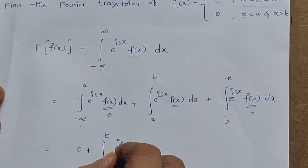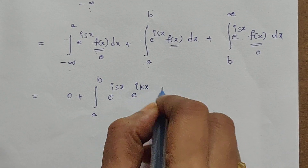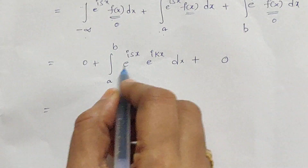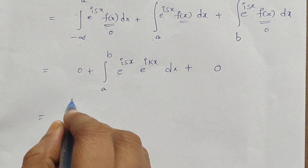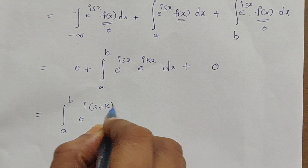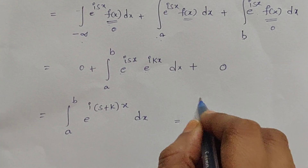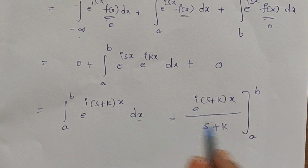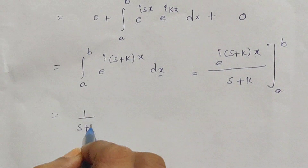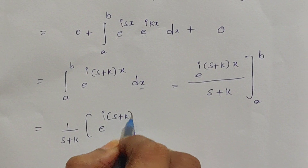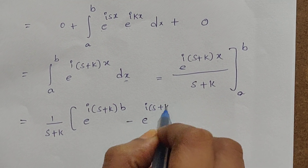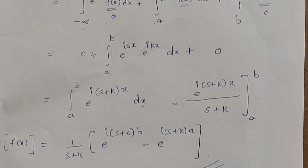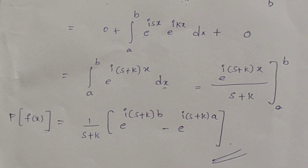In between a to b, the function is defined as e^(ikx). So we evaluate the integral from a to b of e^(isx) · e^(ikx) dx. The bases are the same, so we add the powers: e^(i(s+k)x) dx. The integral evaluates to e^(i(s+k)x) / (s+k), with limits from a to b. Substituting the upper and lower limits gives: e^(i(s+k)b) minus e^(i(s+k)a). This is the required Fourier transform of the given function f(x).